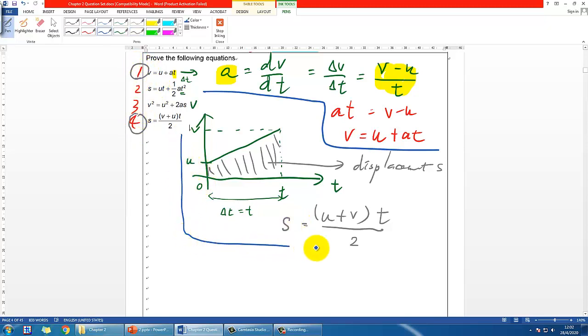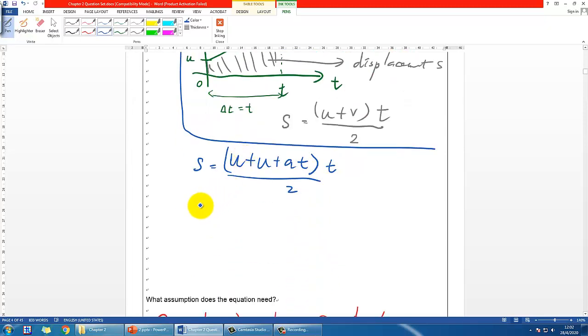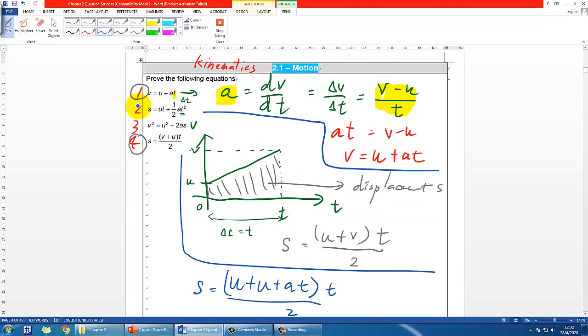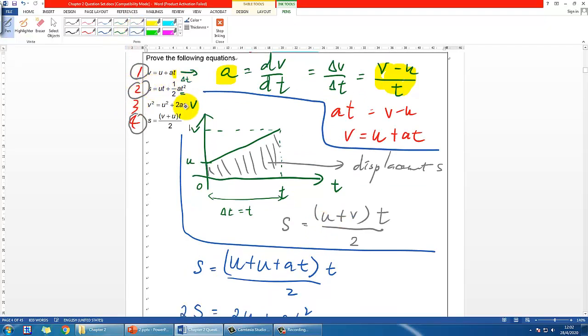For the next equation, you simply substitute V away from the two equations. Take equation 4 again: S = (U + V)T/2. Replace V with what we have from equation 1: V = U + AT. So S = (U + U + AT)T/2. Expanding this gives 2S = 2UT + AT², so S = UT + 1/2 AT². This is equation 2. We have now proven three equations.